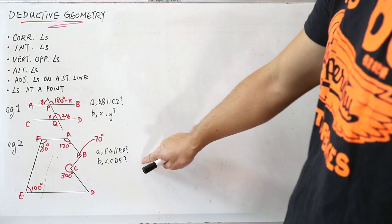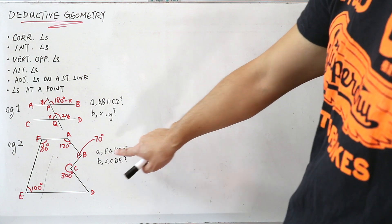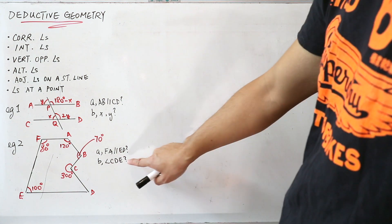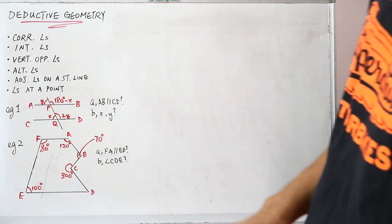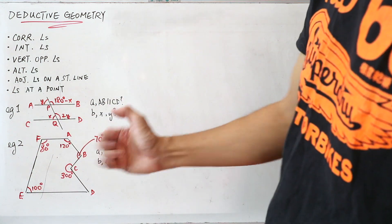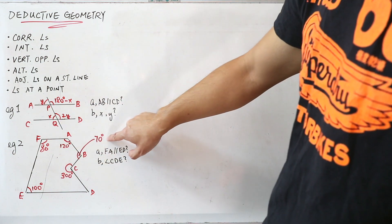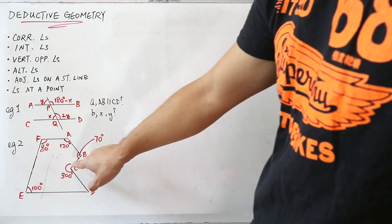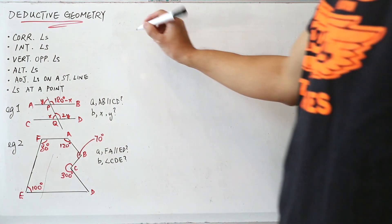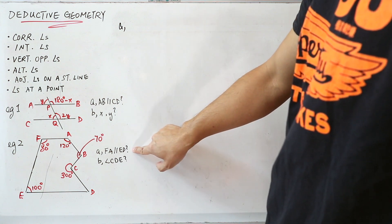Example number two. There are two parts again. Part A is asking whether FA is parallel to ED, and part B is asking you to find angle CBE. You're given a figure with angles: 80 degrees, 120 degrees, 70 degrees, 300 degrees, and 100 degrees.